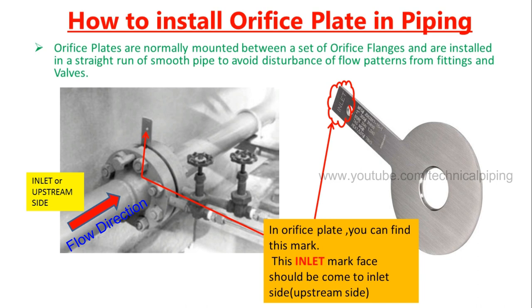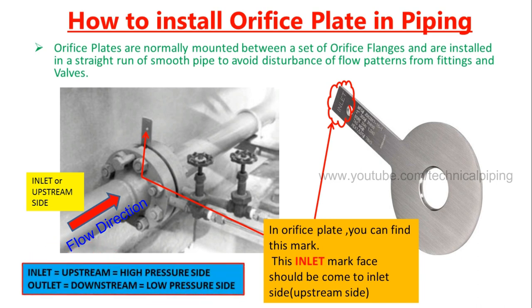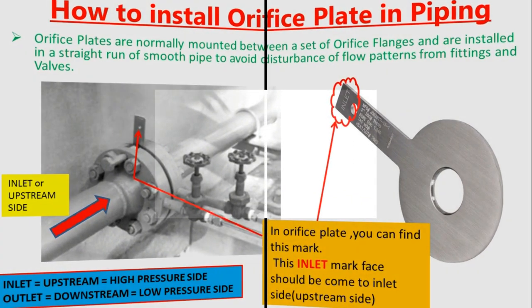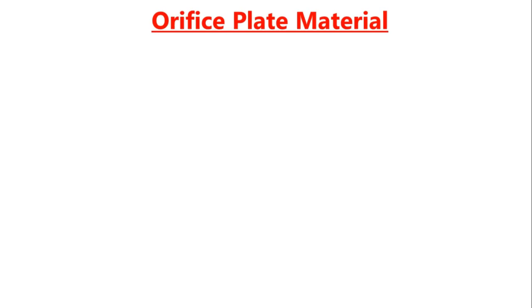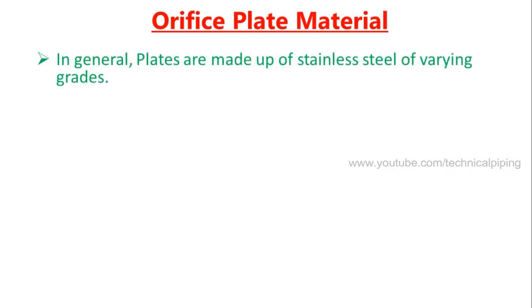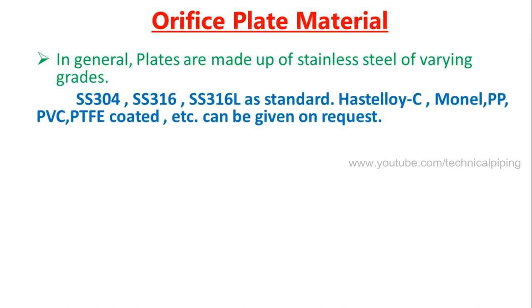The inlet side can also be called the upstream side and the high pressure side. Similarly, the outlet side can be called the downstream side and the low pressure side. Regarding orifice plate material, plates are generally made of stainless steel of varying grades, with other materials available on request.